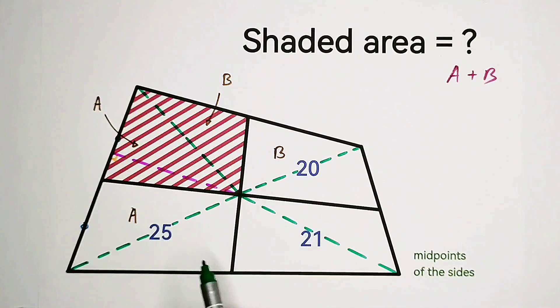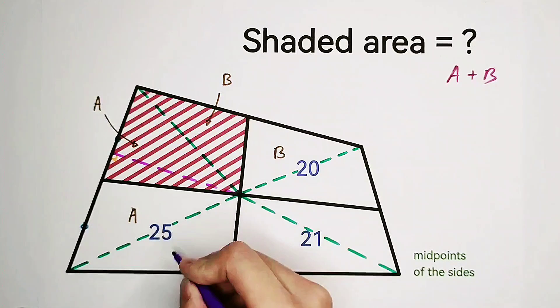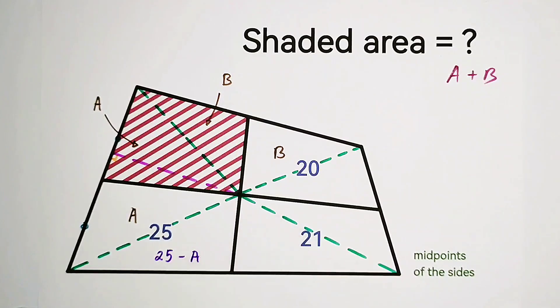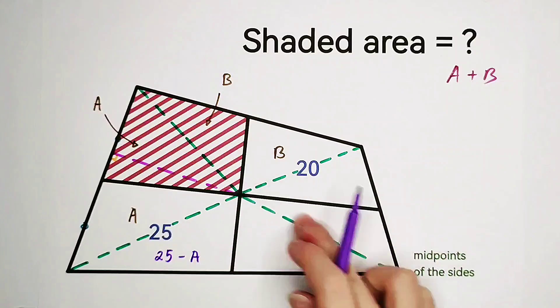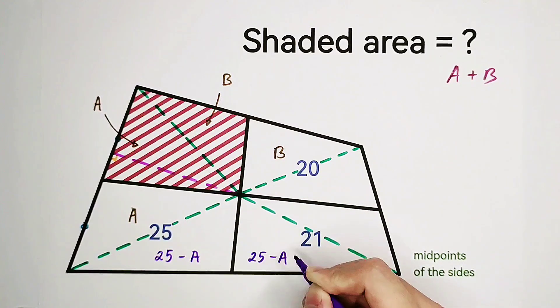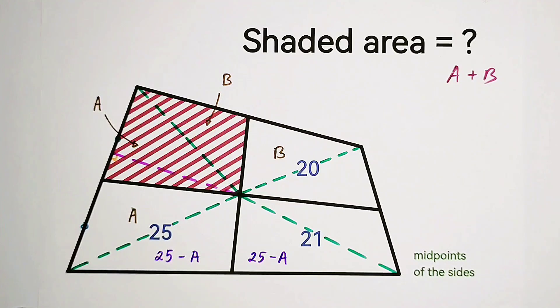However, there are four triangles left. Don't worry. Here is A. Here is, of course, 25 minus A. Why? Because the area of this quadrilateral is 25. So this triangle must be 25 minus A. So that means this triangle is also 25 minus A. Because they have the same area.